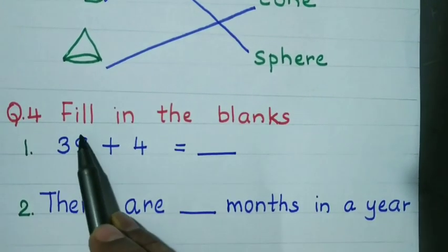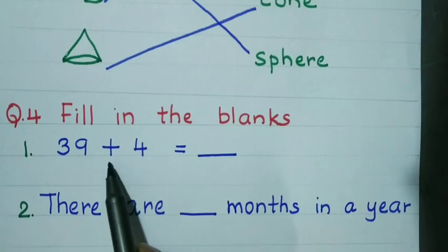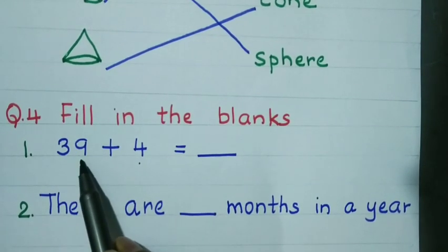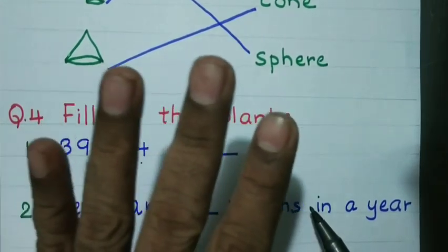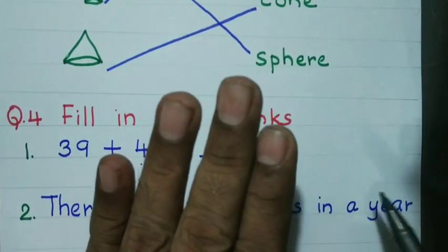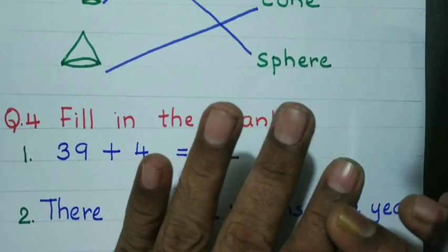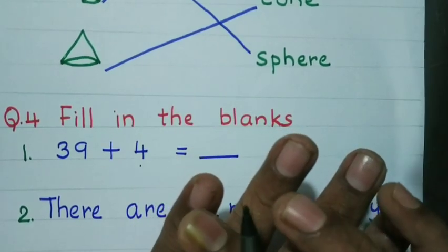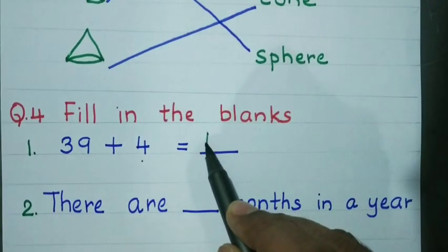Question number 4: Fill in the blanks. 39 plus 4. Keep the starting number 39 in your mind and take 4 fingers, then do forward counting. After 39: 40, 41, 42, 43. So, 43 is the answer.